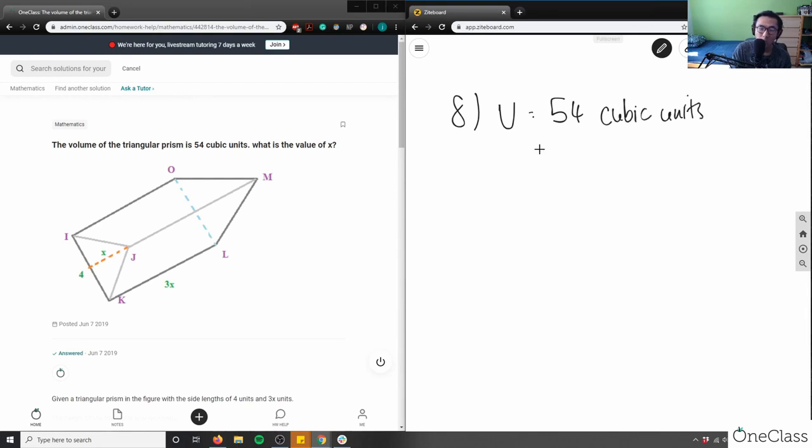So it's asking, what is the value of x here? And we're given some dimensions. We're given 3x from K to L here, and then I have a dimension of 4 from I to K. And it's asking here, what is this x value?